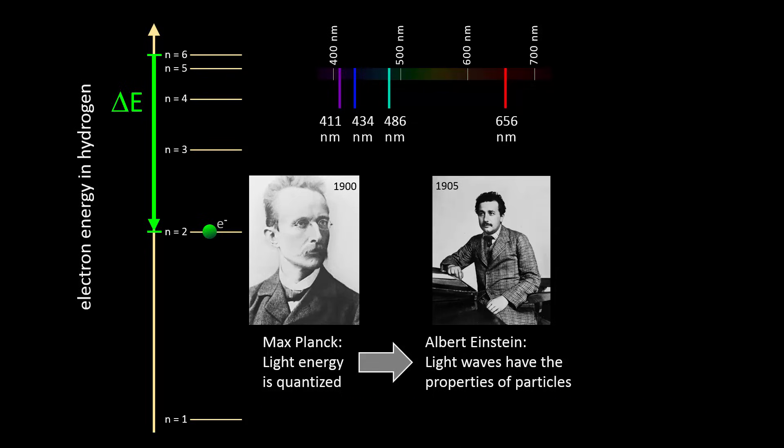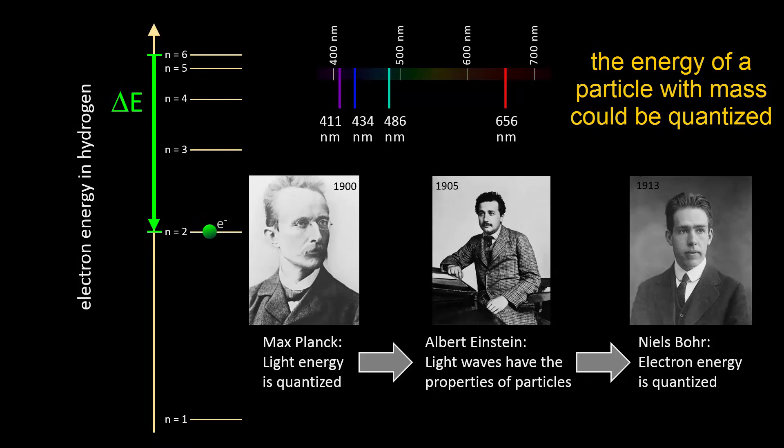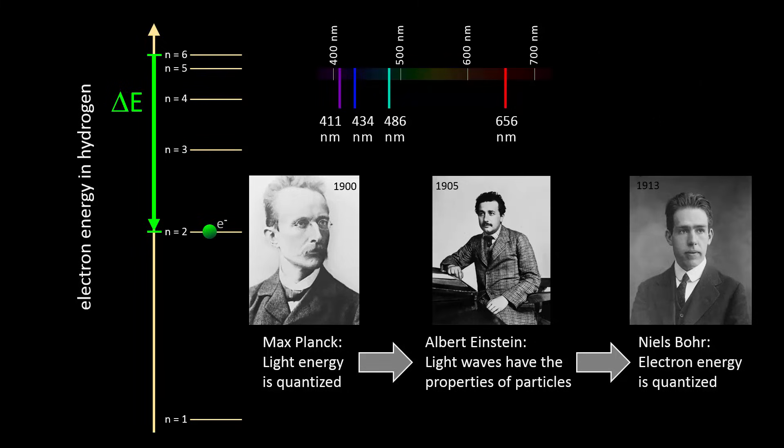So, with the existence of quantized light behaving like a particle with mass, in 1913, Bohr looked at the other side of that coin and found that a particle with mass, such as the electron, could behave as if it was quantized. Yes, you guessed it, this got him a Nobel Prize.